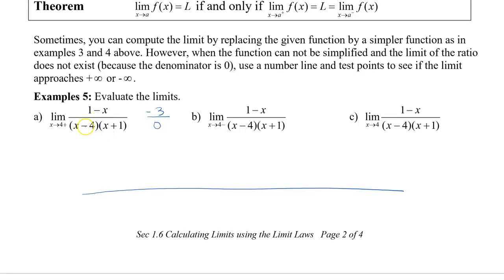The critical numbers are the values that make each factor equal to zero. From the denominator, x equals 4 gives zero, and x equals negative 1 also gives zero. From the numerator, x equals 1 gives zero. I'm going to plot all three points on the number line. This doesn't have to be perfect, but now we can look at all the different intervals and see what happens.